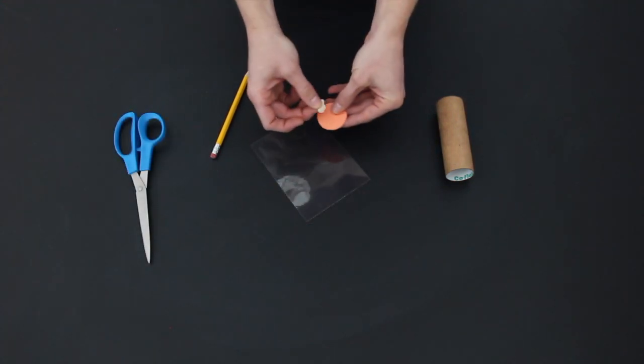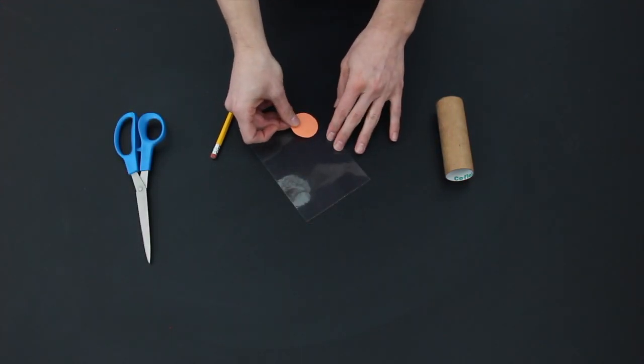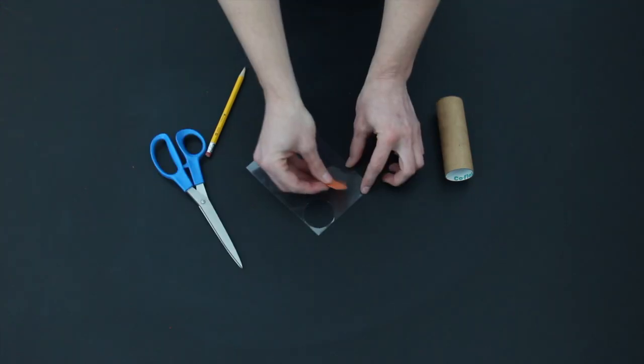Now, use your template to cut out two circles from the transparency film. You can use a little bit of tape on the back of the template to secure it while you cut.